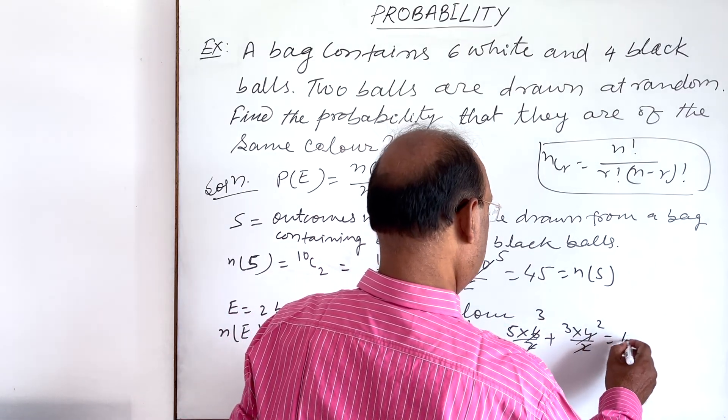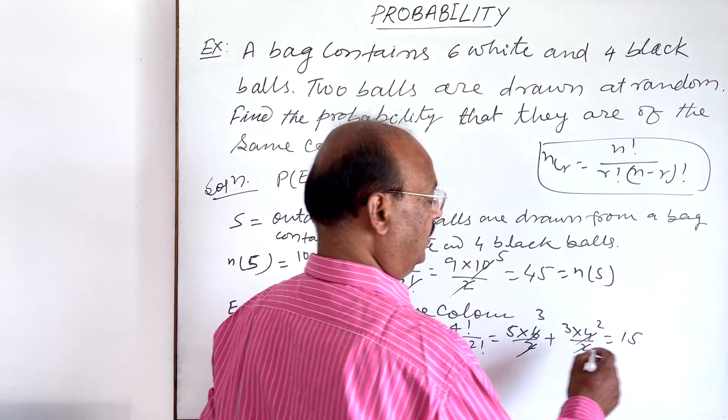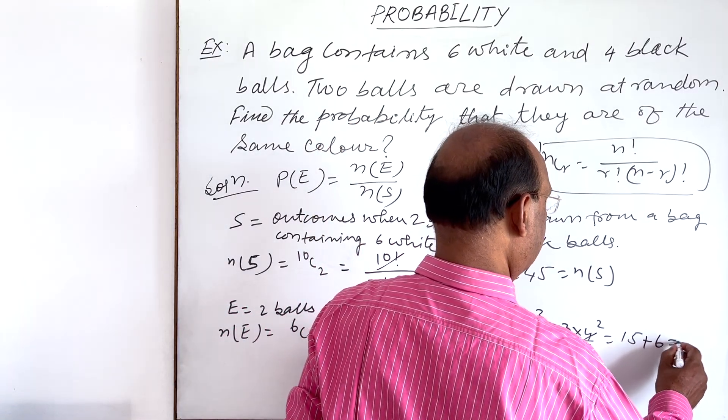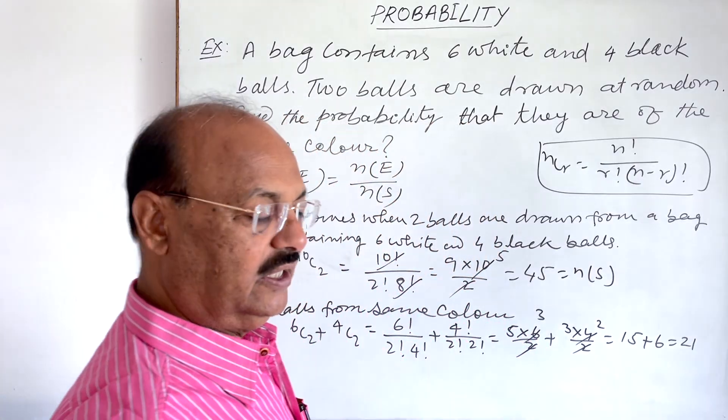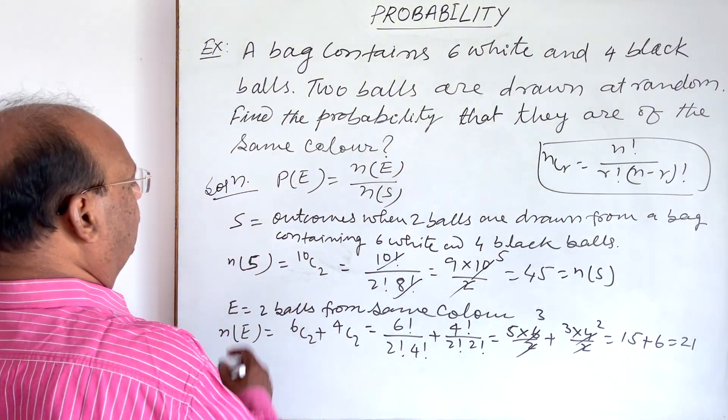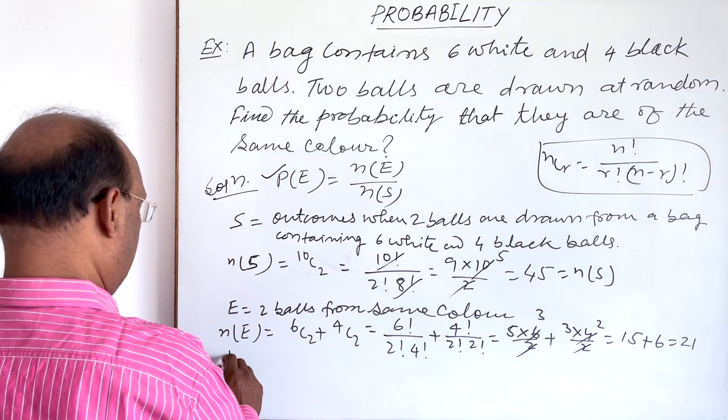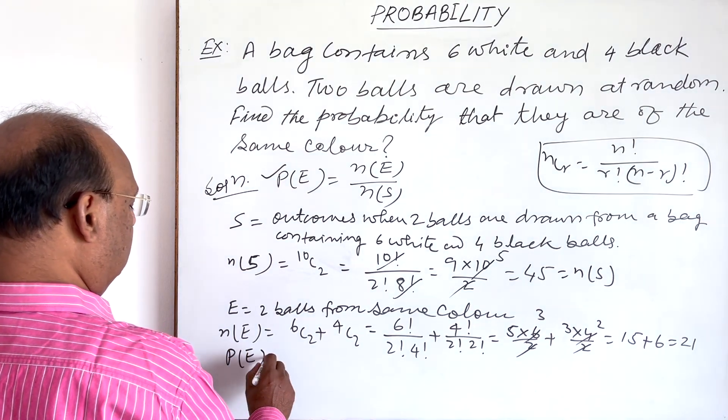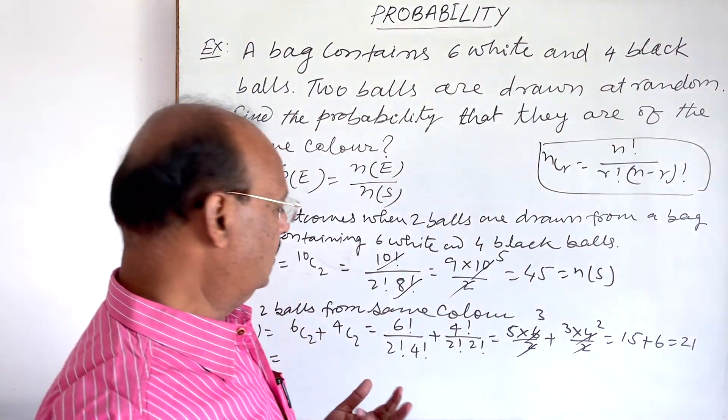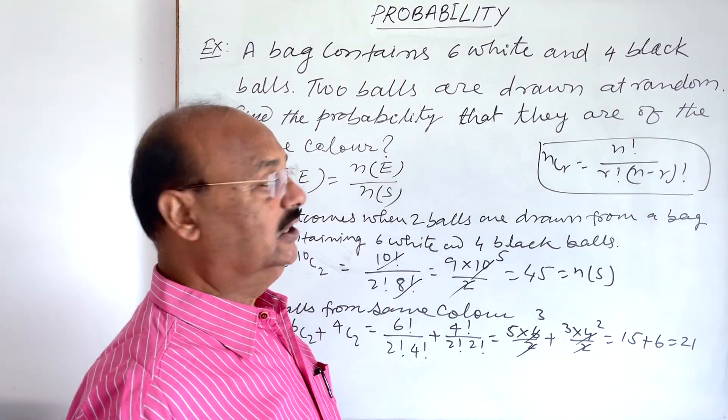So this is equal to 15 plus 6. This is equal to 21. Using this formula, we can find out probability of this event, means two balls drawn are from the same color, both are from white or from black.